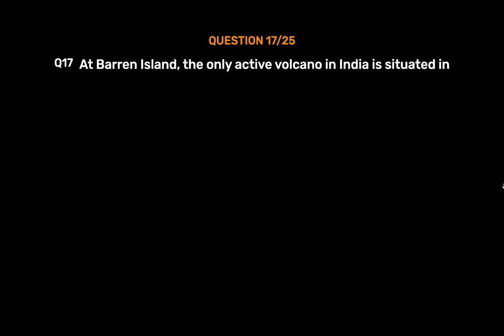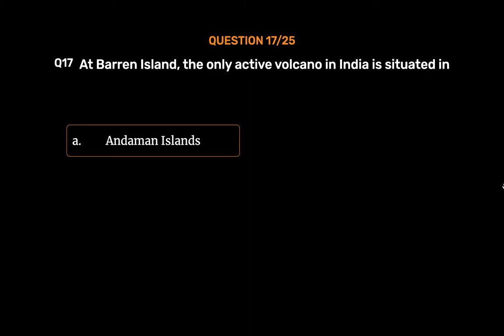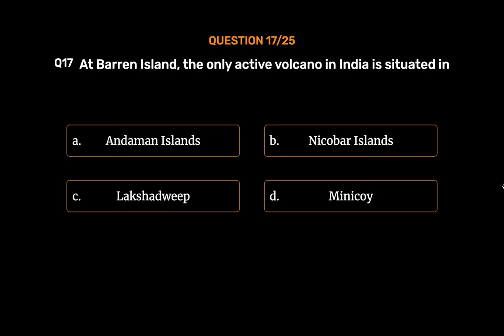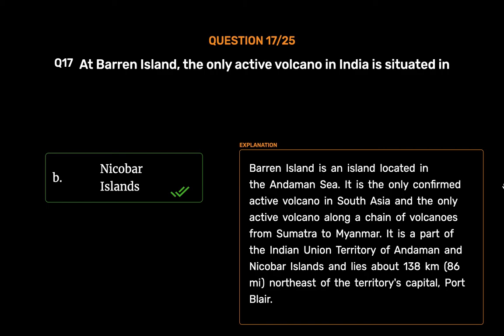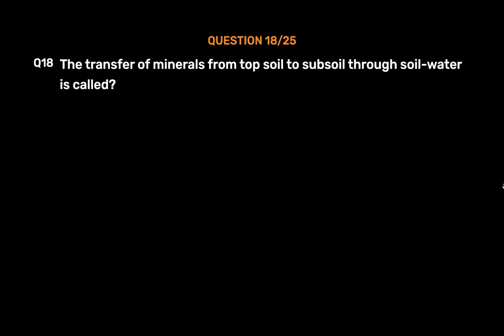Question No. 17. At Barren Island, the only active volcano in India is situated in. Option A: Andaman Islands. Option B: Nicobar Islands. Option C: Lakshadweep. Option D: Minikoi. The correct answer is Option B: Nicobar Islands. Barren Island is an island located in the Andaman Sea. It is the only confirmed active volcano in South Asia and the only active volcano along a chain of volcanoes from Sumatra to Myanmar. It is part of the Indian Union Territory of Andaman and Nicobar Islands and lies about 138 km (86 miles) northeast of the territory's capital, Port Blair.